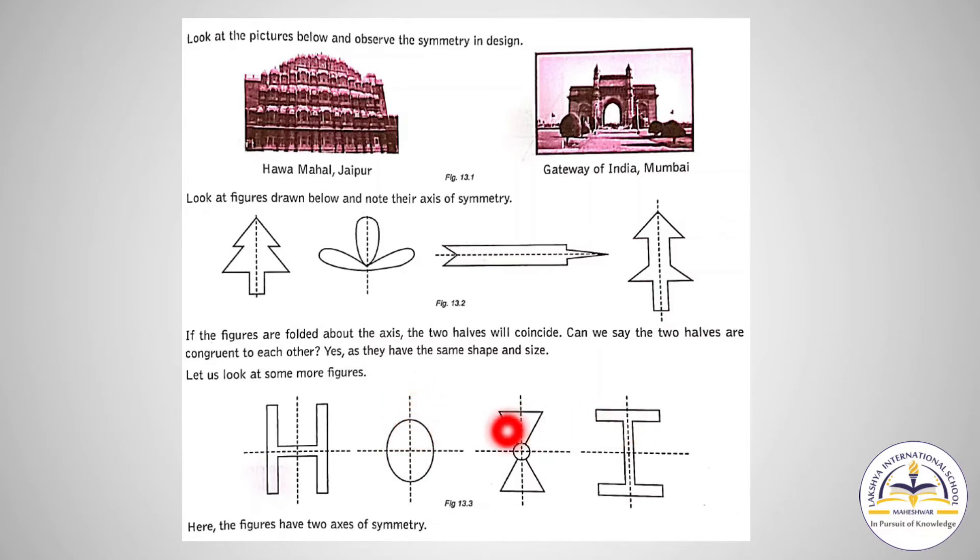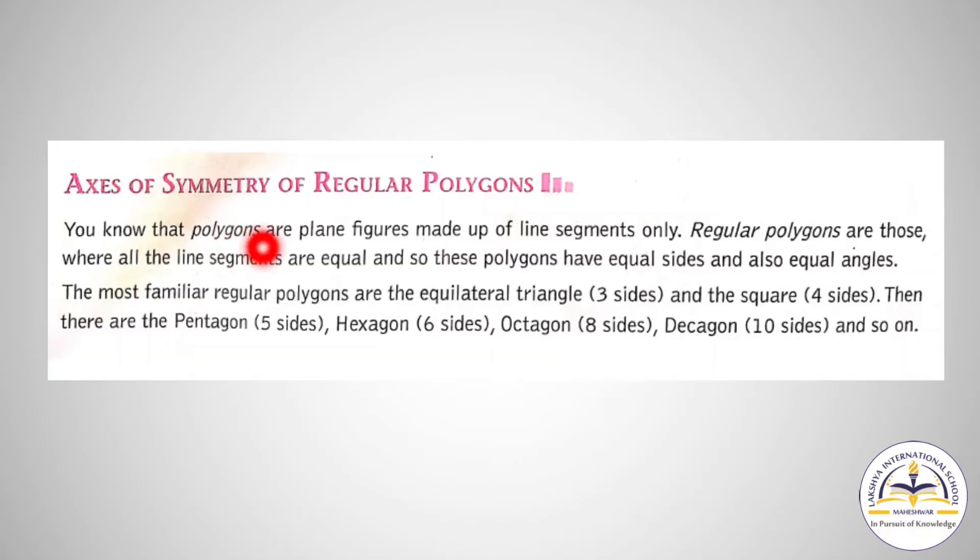The most familiar regular polygons are the equilateral triangle, which has three sides, and the square, which has four sides. Then there are pentagon (five sides), hexagon (six sides), octagon (eight sides), decagon (ten sides), and so on.